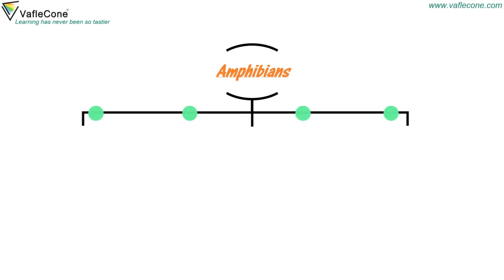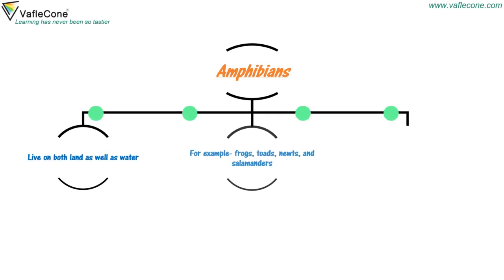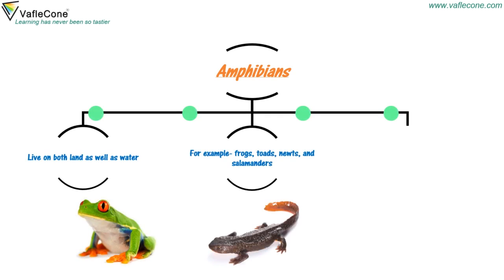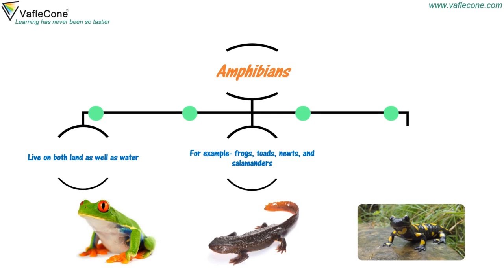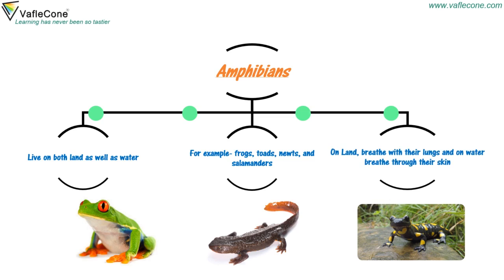Amphibians live on both land as well as water. For example, frogs, toads, newts, and salamanders. On land, they breathe with their lungs, and in water, they breathe with their skin.